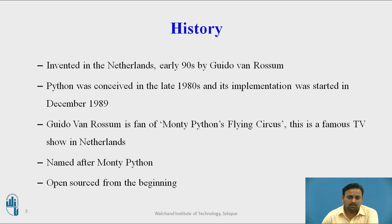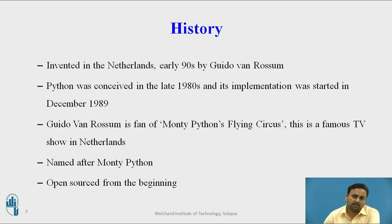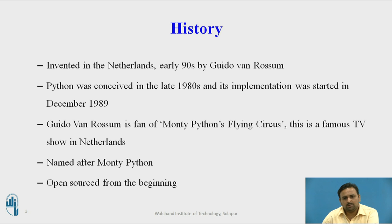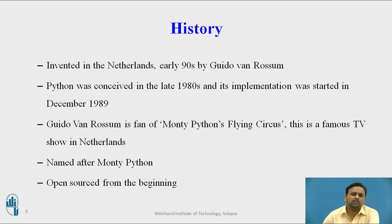A lot of people get curious about why the name is Python. Most think it is related to the dangerous snake, but that is not the history of the Python programming language. Actually, Guido Van Rossum is a fan of a particular famous TV show from the Netherlands — Monty Python's Flying Circus — and he was a big fan of that show, so he named his programming language Python. Also, Python is an open source programming language from the very beginning, so the code is available to everyone and anybody can make changes and release their own versions.